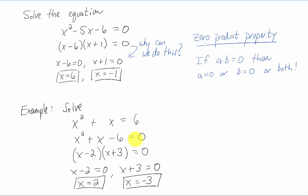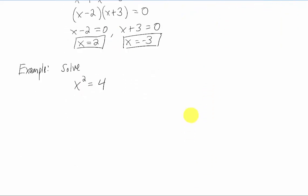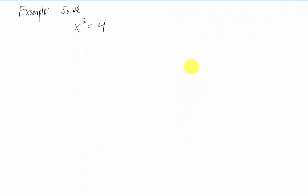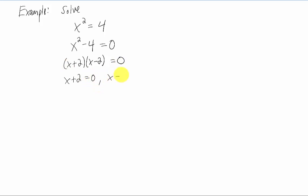We want to get everything on one side of the equation, do whatever algebra is needed to get a factored expression equal to zero on the other side, then split up those factors into pieces. Another quick example: solve x squared equals 4. Get everything on one side. You'll notice this is a difference of squares. We now have factors multiplied by one another set equal to zero, so we split it into two pieces and solve for x, getting our two answers.